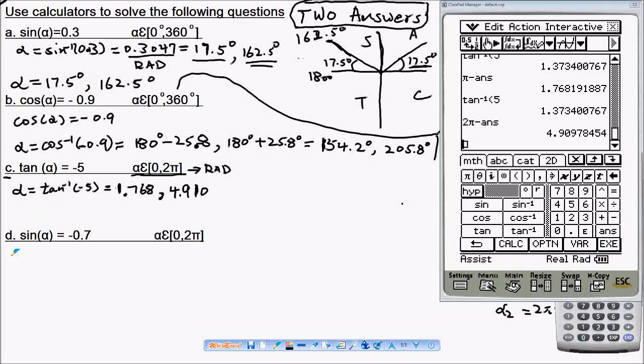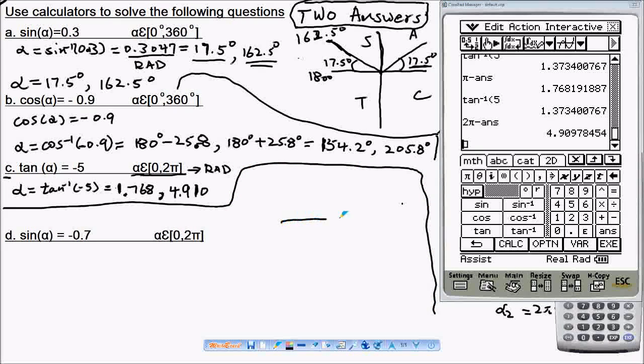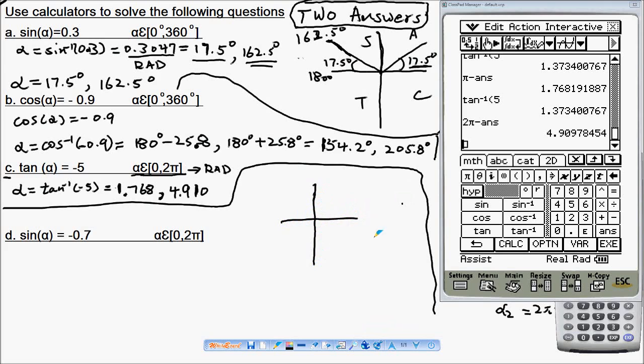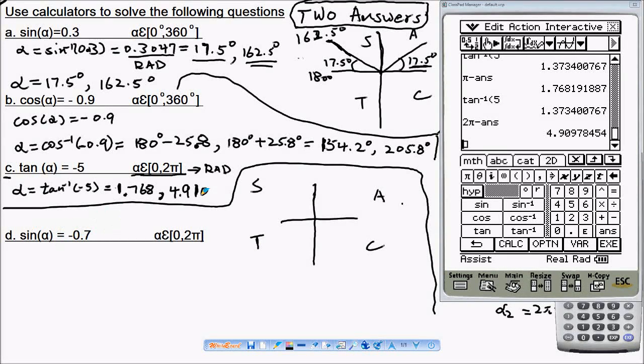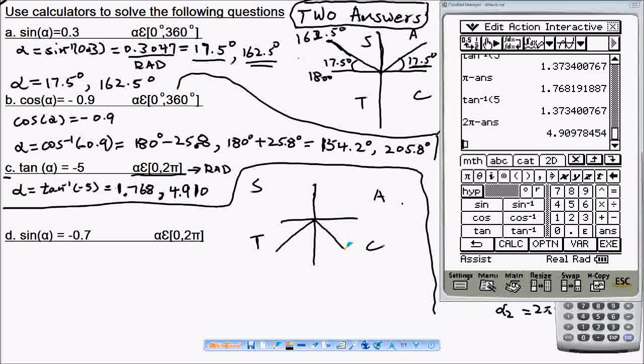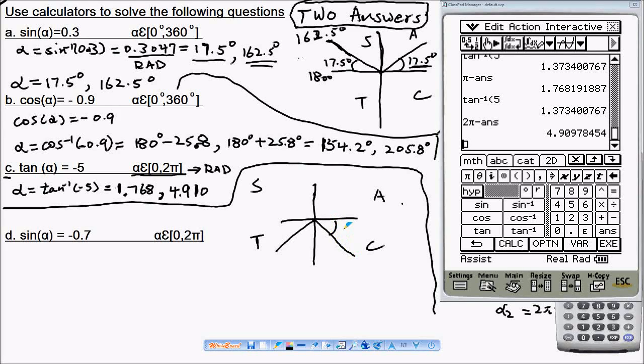Now let's do question d. In question d let's draw a unit circle first. We have sin alpha equals to minus a number, so our answer in the unit circle should be in the third quadrant and the fourth quadrant and we find the angle theta here.